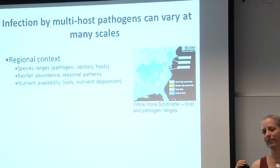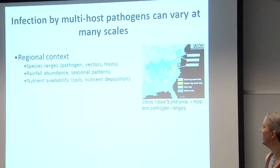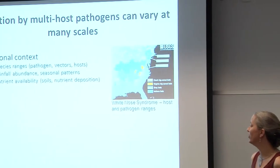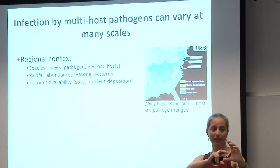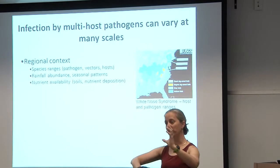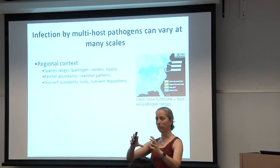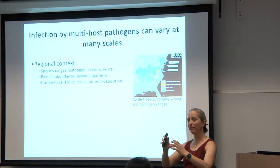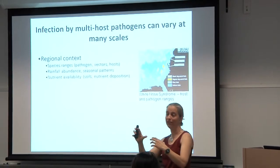I want to think about scales of infection — at large spatial scales but also phylogenetic scales. We have infection that requires a lot of different elements to persist. First, the regional context: species ranges need to be overlapping. You need the host in the same place as the pathogen, and if it's vectored, in the same place as the vectors. Whether through changing climate, changing distributions, or invasive species, these ranges can shift through time. We could also see a reduction in infection prevalence if ranges shift such that they're less overlapping.